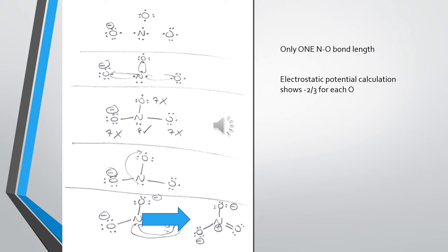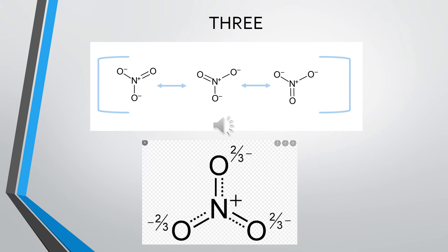When you calculate the electrostatic potential, you see that each oxygen has a negative two-thirds electron density. Note that three oxygens times negative two-thirds apiece is a total charge of negative two. As with ozone, the experimental facts can be rationalized with valence bond theory if the nitrate anion is a one-third, one-third, one-third hybrid of the three Lewis electron dot structure forms shown on the slide. So nitrate anion is best represented by three equally contributing resonance forms.